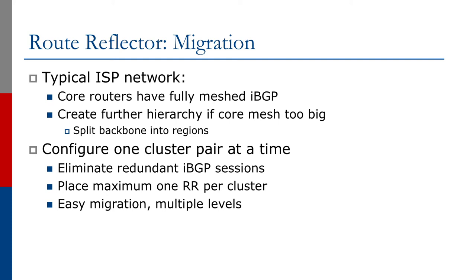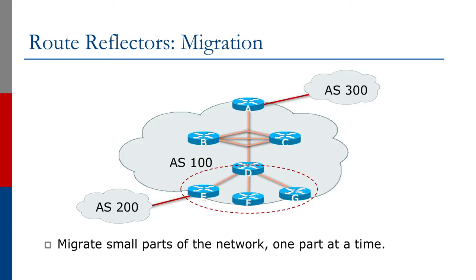During deployment, it is better to work on one cluster pair at a time rather than migrating the entire backbone in a single maintenance window, especially if you are new to how route reflectors function. In the example diagram, a network with seven routers is shown, and we work on routers D, E, F, and G. Router D is made the route reflector, with E, F, and G becoming its clients.